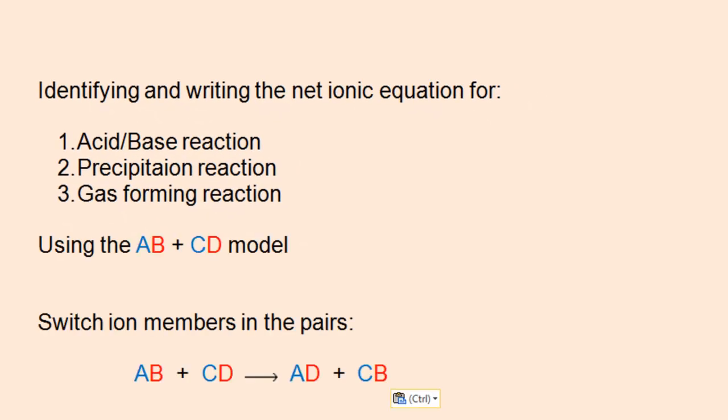I'll use the ABCD model, assuming A and C are cations and B and D are anions. The idea behind the ABCD model is that you switch the ion members in the pairs. So cation A would combine with anion D, and cation C would combine with anion B.